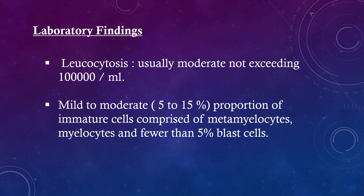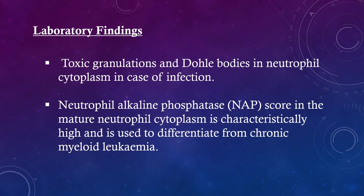Laboratory findings. Leukocytosis is usually moderate, not exceeding 1 lakh per ml. Mild to moderate 5 to 15% proportion of immature cells comprised of metamyelocytes and fewer than 5% blast cells. Toxic granulations and Döhle bodies in neutrophil cytoplasm in cases of infection. Neutrophil alkaline phosphatase score in the mature neutrophil cytoplasm is characteristically high and is used to differentiate from chronic myeloid leukemia.